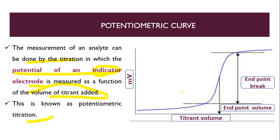Here you can see the potentiometric curve. You can see it's like a curve — it's a potentiometric curve. You can see the titrant volume on the x-axis. As you are adding titrant, the potential will be raised slowly, drop by drop it will be raised slowly. This will be the end point volume, you can see over here — this is the end point volume.